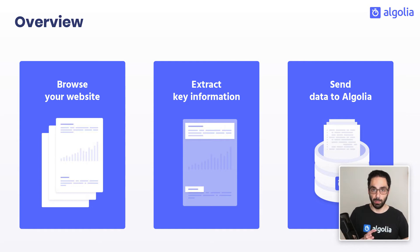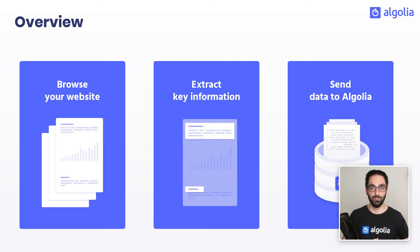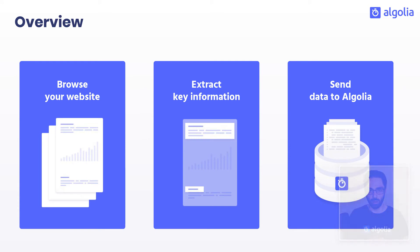Then, on each of your pages, it's going to extract important information, like a title, a paragraph, or a URL. Then, all of this information will be directly sent to Algolia.